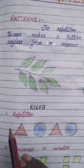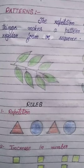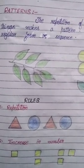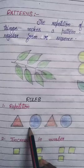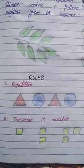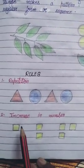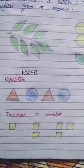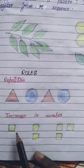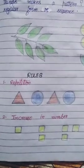First rule is repetition. Repetition means repeat of certain things. Like here a triangle and circle is being repeated each time. Second rule is increase in number. Here the square is increasing each time. Here 1, here 2 square, then 3, then here will be 4, like that.